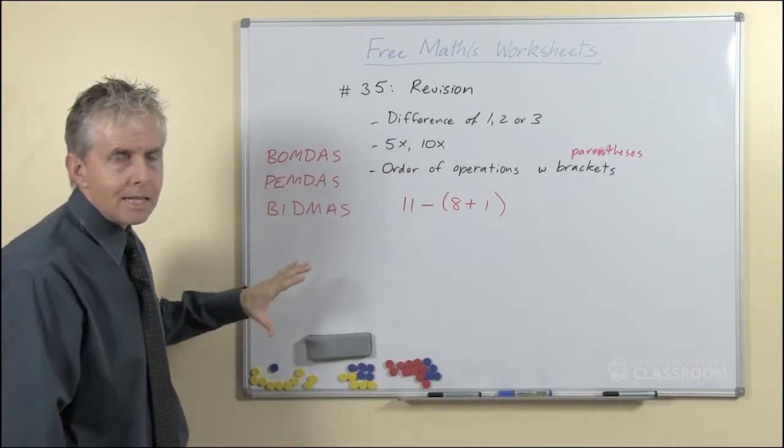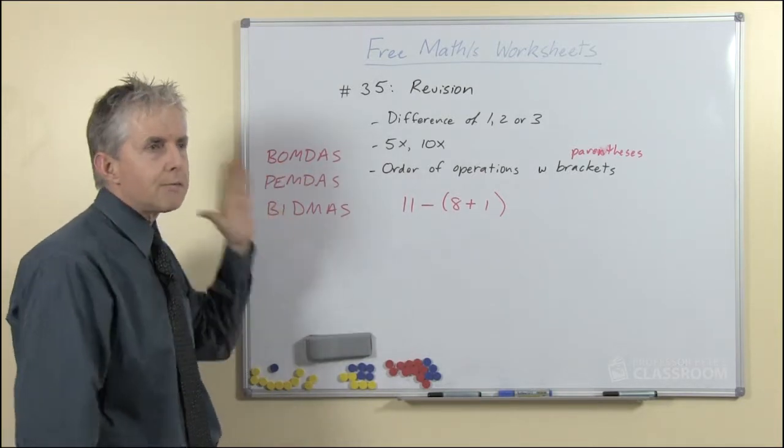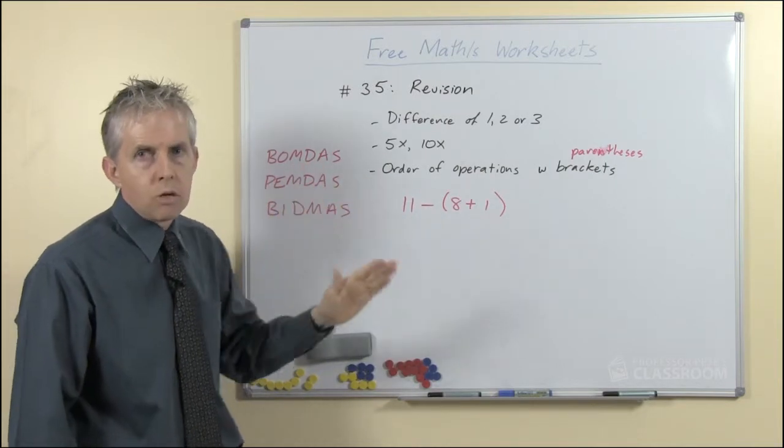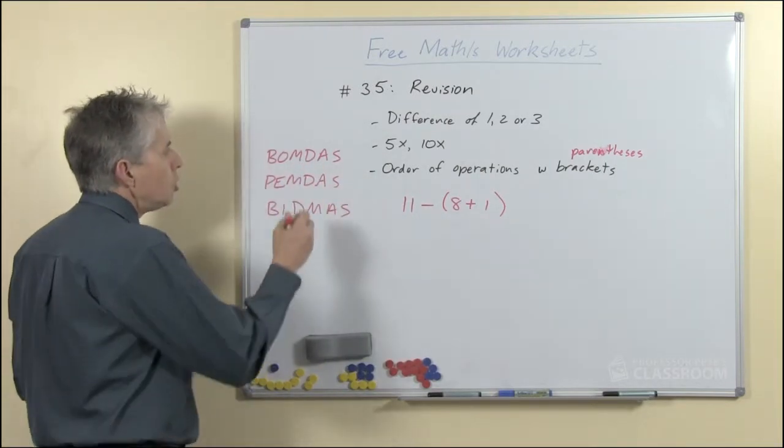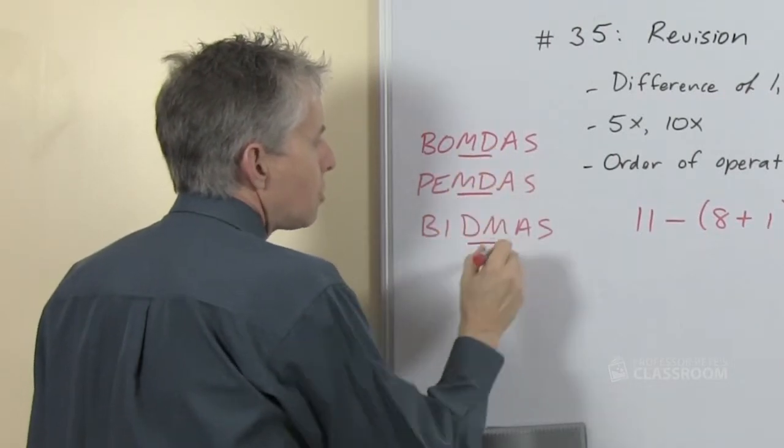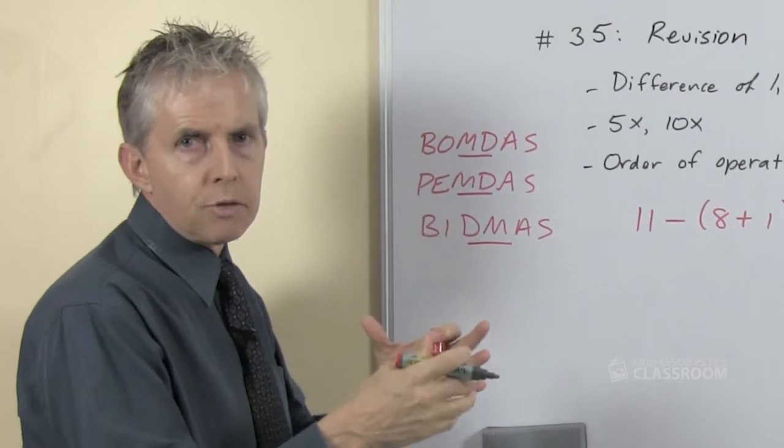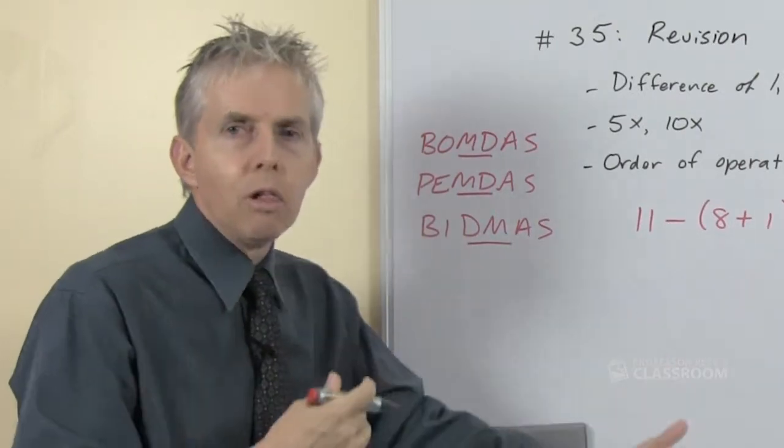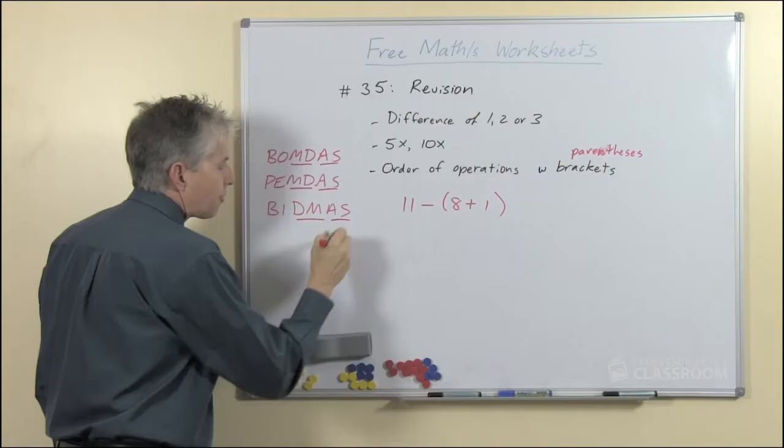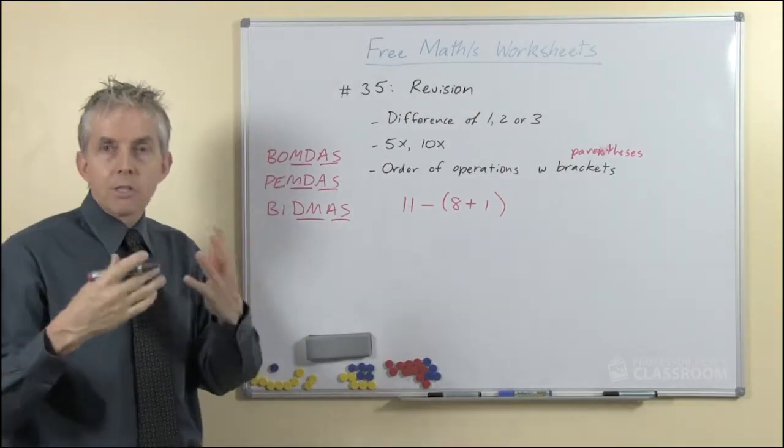The problem with all of these is that it implies that there are six stages and that you apply them strictly in order one after the other. But you will realize that we don't, and that multiplying and dividing have to be done in order from left to right at the same level, and then adding and subtracting are done from left to right at the same level.